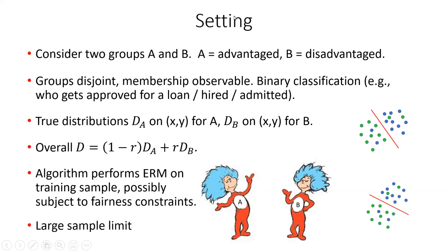I'm going to be working in the large sample limit, so I won't be worrying about the usual difference between empirical error and generalization error from small samples. There will be a difference that comes from our bias models, but we're thinking in the large sample limit to avoid worrying about multiple things at once. It would certainly be interesting to look at these in a smaller sample setting, but we're focusing on the large sample limit.